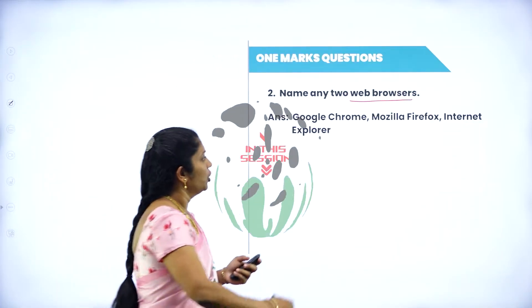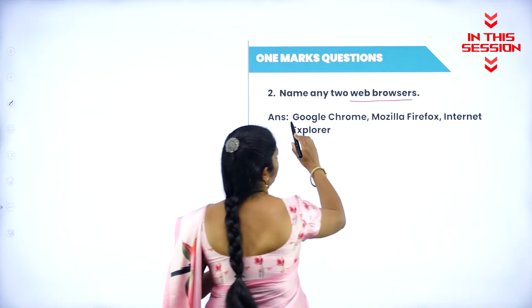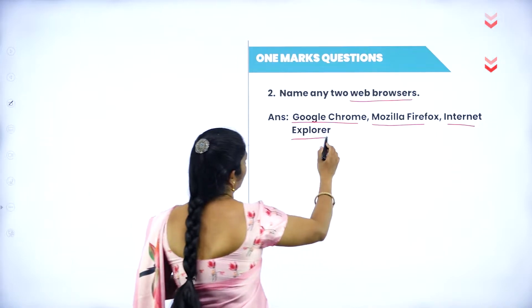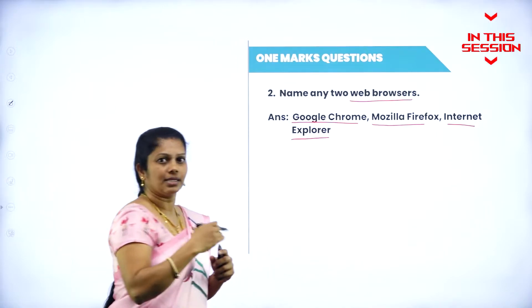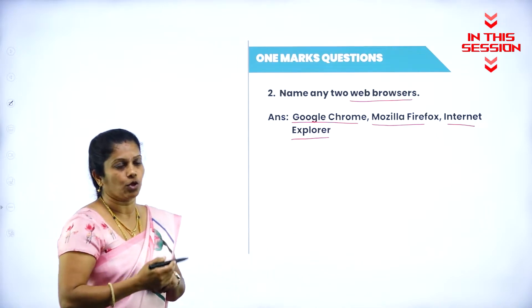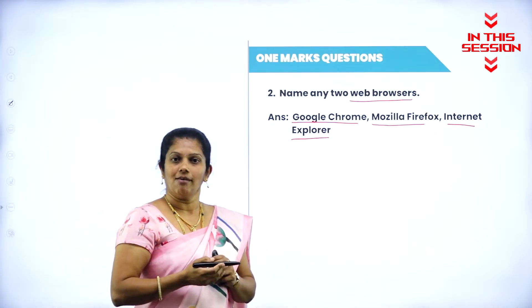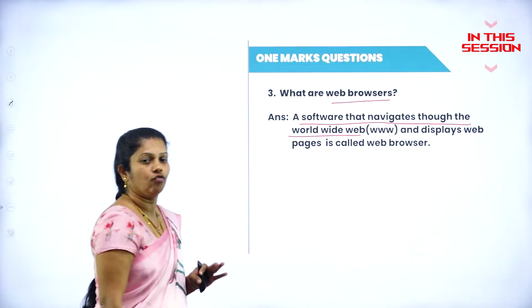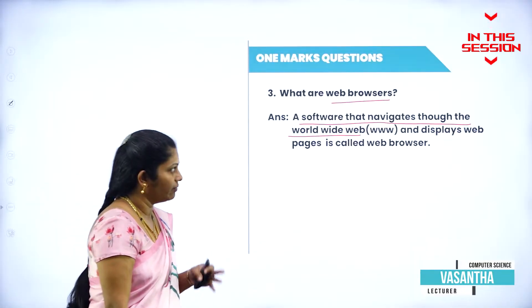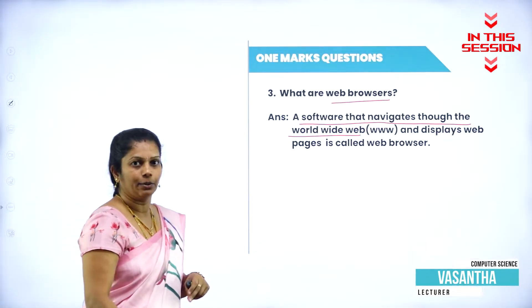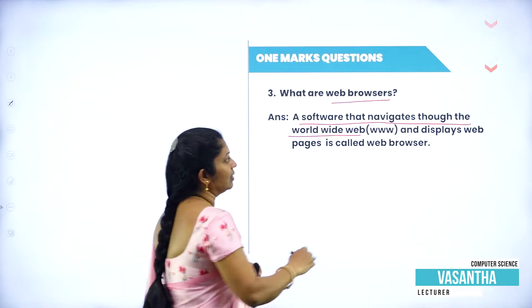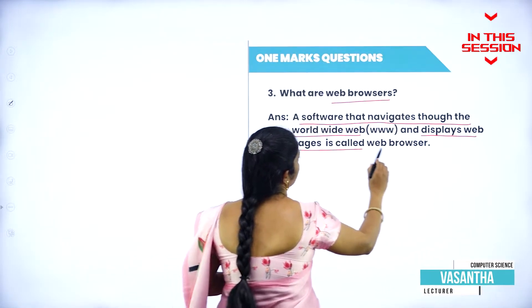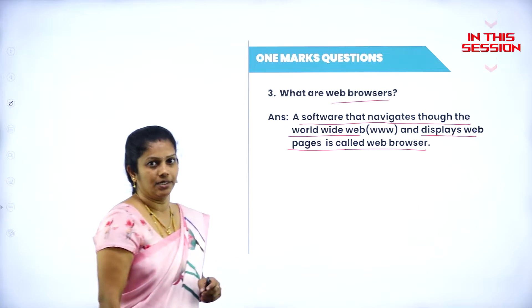Web browser — you can use Google Chrome, Mozilla Firefox, Internet Explorer. These are several types of web browsers we are using nowadays. With the help of WWW, that is World Wide Web, we can navigate and it displays web pages. It is called a web browser.